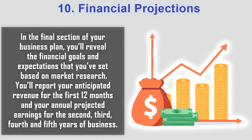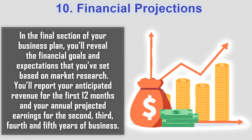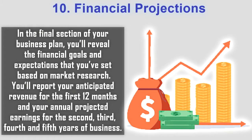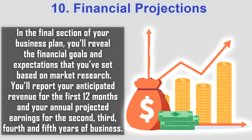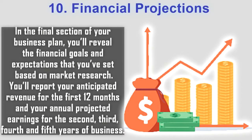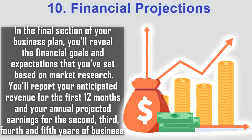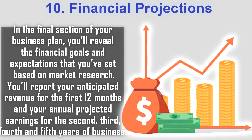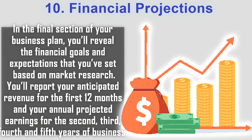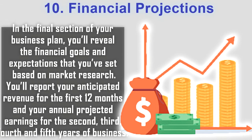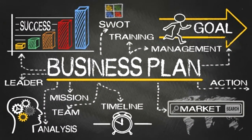Then the last element is your Financial Projections. Har aspiring company ki koi na koi financial projection honi chahiye. Ek saal mein, do saal mein, ya aane waale paanch saalon mein aap kitna revenue generate karna chahte hain? Apni company ko kitne level tak scale-up karna chahte hain? Kai baar startup owners investor ko impress karne ke liye bahut high ambitious financial projections dikhate hain jo ki impractical ya unachievable hoti hai. Isliye aapko ek relevant, realistic aur practical financial projection apne investors ke saamne rakhna hai. Toh dosto, yeh the 10 elements of a proper business plan.